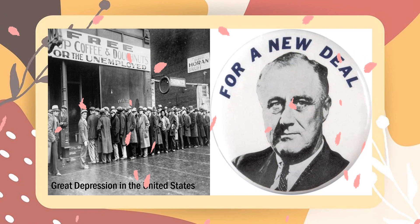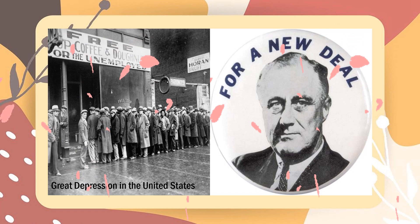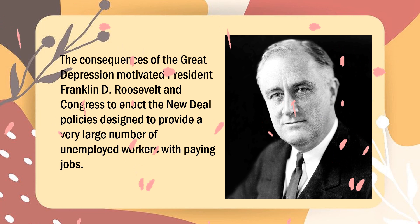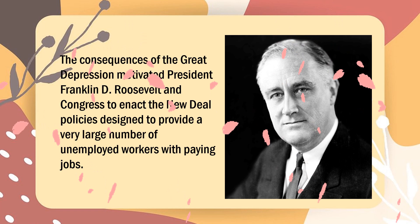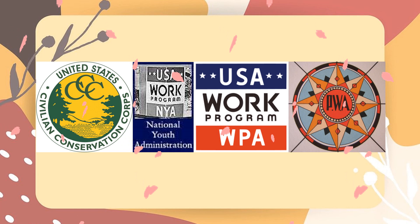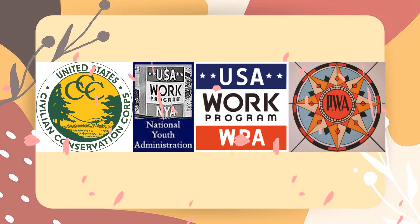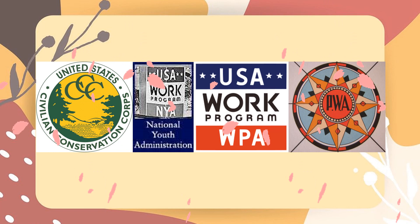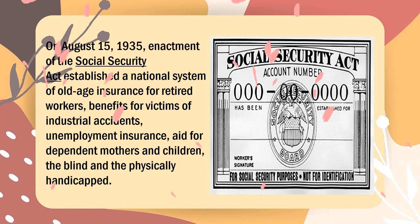A final step in the evolution of modern social welfare history was determined by the impact of the Great Depression, the New Deal, enactment of the Social Security Act, and the domestic programs known as the Great Society. The consequences of the Great Depression motivated President Franklin D. Roosevelt and Congress to enact the New Deal policies designed to provide a very large number of unemployed workers with paying jobs. These initiatives were the impetus for creating the Civilian Conservation Corps, the National Youth Administration, the Works Progress Administration, and the Public Works Administration. Federal work relief programs were looked upon favorably by most Americans because they made public assistance something earned rather than granted.